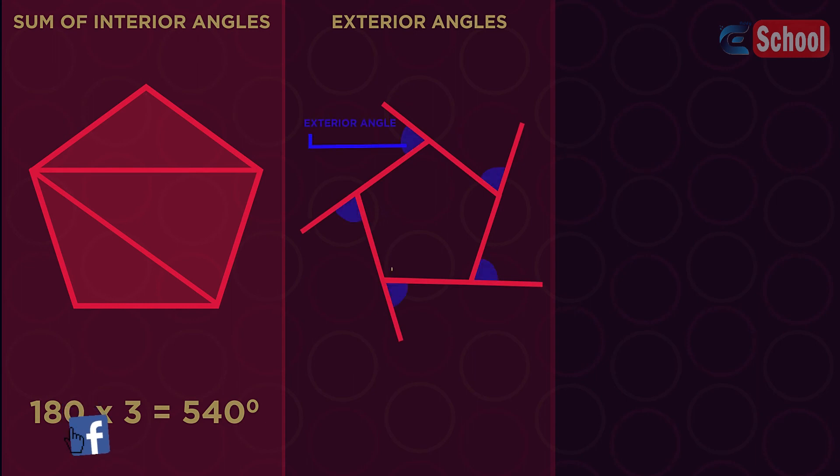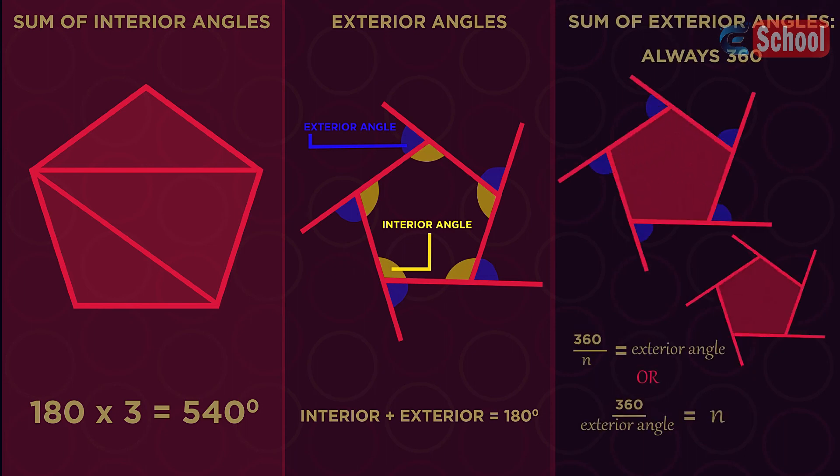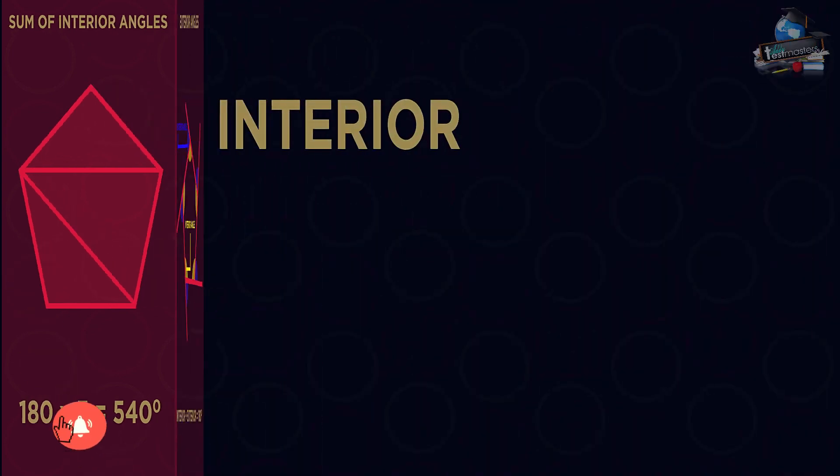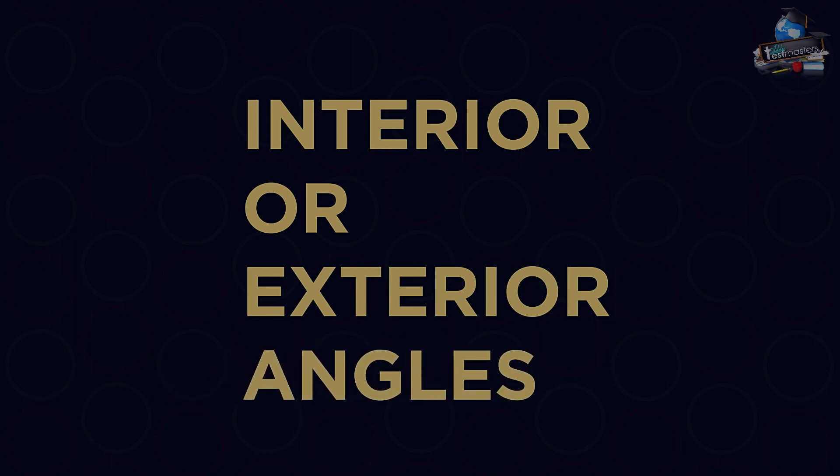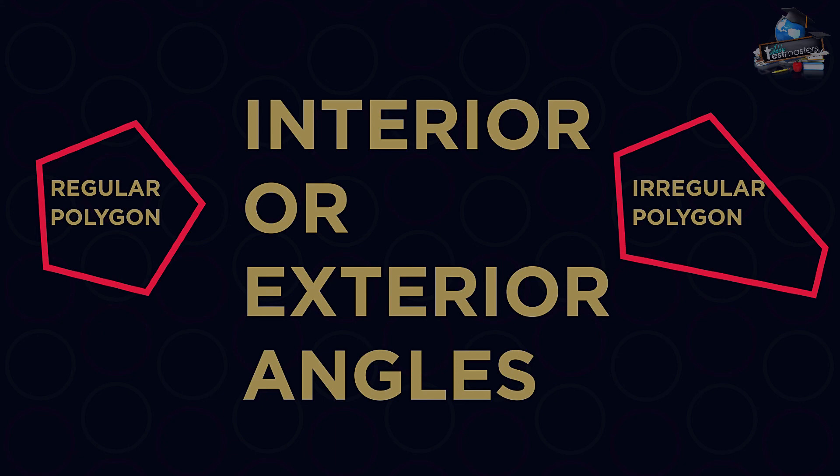Exterior angles always make 180 degrees with the interior angle. And exterior angles always add up to 360 degrees. Combining knowledge of all of these facts, we can work out any interior or exterior angles. Just make sure if it's a regular or irregular polygon first.